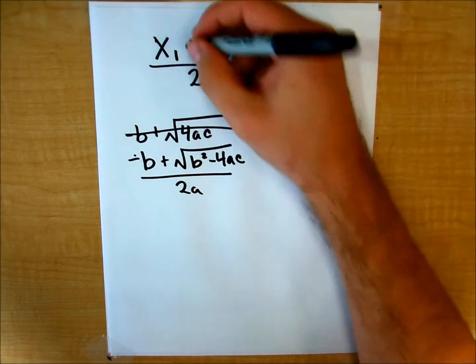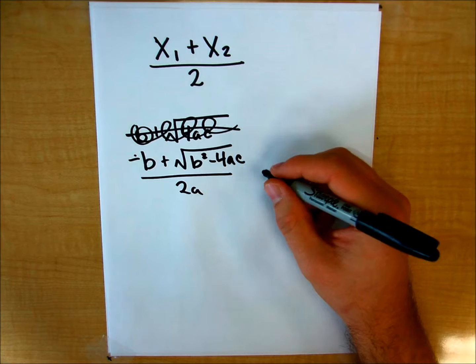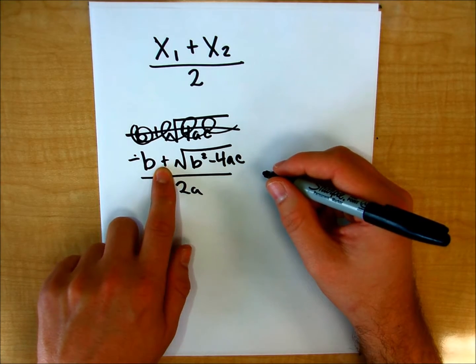And then I can add that. That's my x sub 1, right? That's my first zero with this addition sign here.